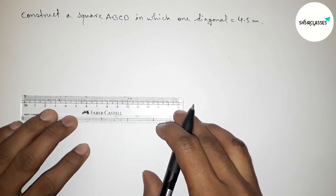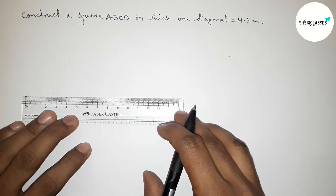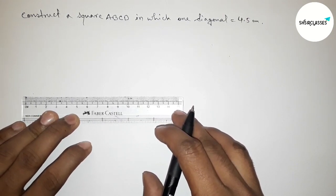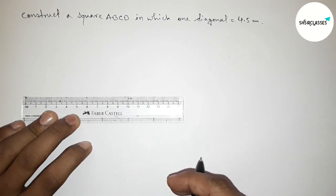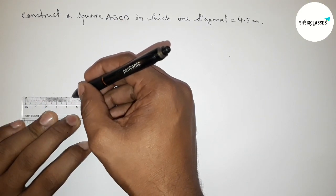First of all with the help of scale, first drawing here the diagonal 4.5 centimeter line segment. So this is 4.5 centimeter line segment.